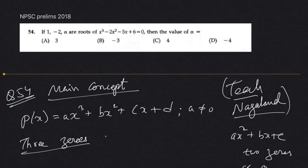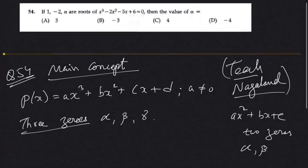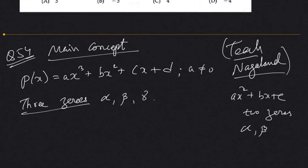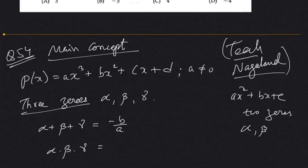For a cubic polynomial we will have three zeros: alpha, beta, and gamma. The sum of the three zeros — alpha + beta + gamma — is equal to minus b by a, comparing the coefficients. And the product of the three zeros is equal to minus d by a.